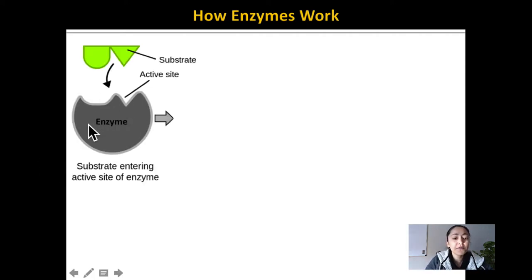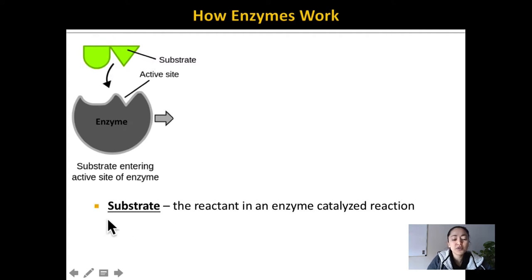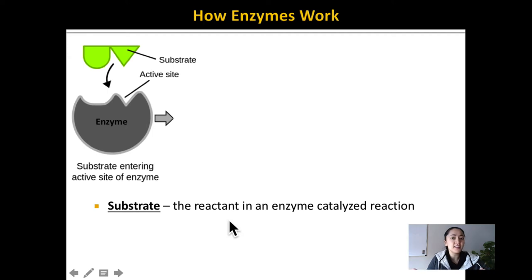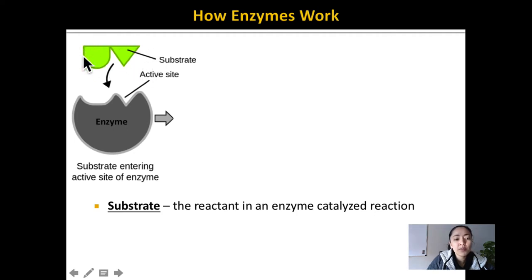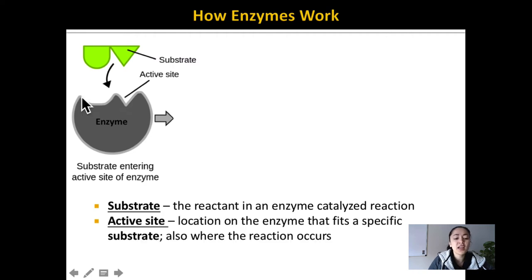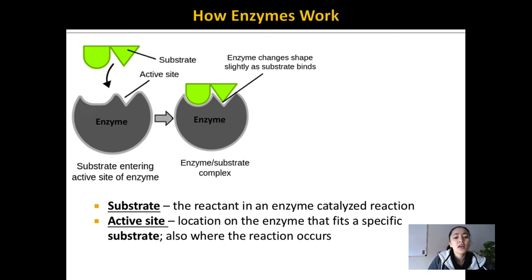Here we have an enzyme. The first thing that happens is the reactant — which is also called a substrate — enters. Remember, the reactant in an enzyme-catalyzed reaction is simply called a substrate; it's the thing that is being changed into something else. This substrate — in the example we were talking about, it would be hydrogen peroxide — actually comes into a location on the enzyme called the active site, where the chemical reaction actually occurs.